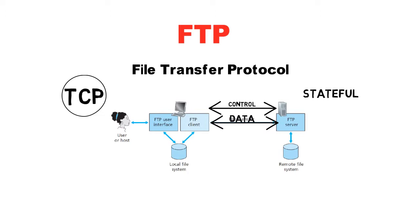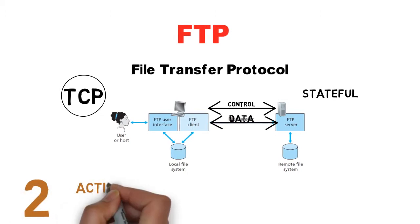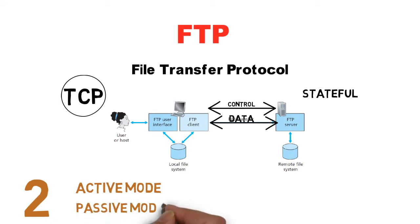Both control and data connections are fully duplex. FTP works in two modes: one is active mode and another is passive mode. In active mode, the data connection is initiated by the server. In passive mode, the data connection is initiated by the client.